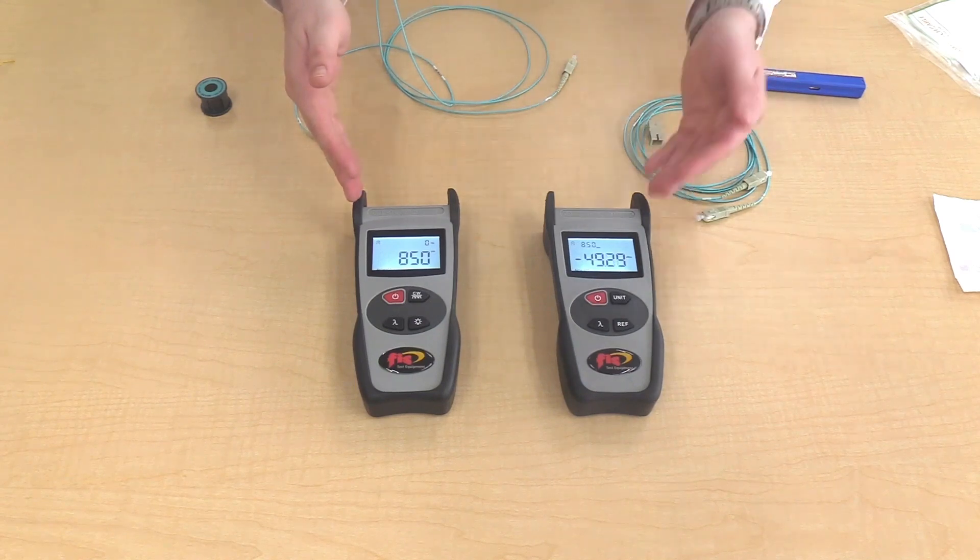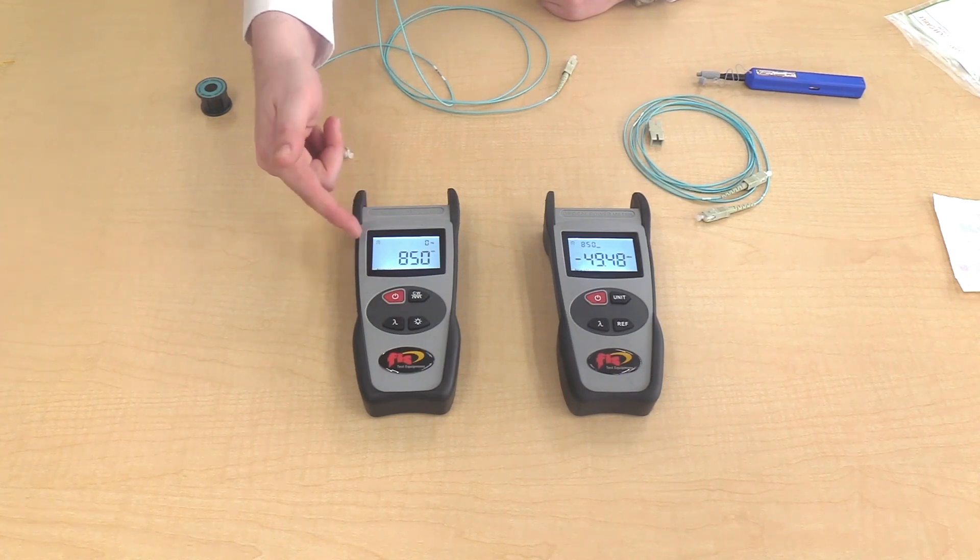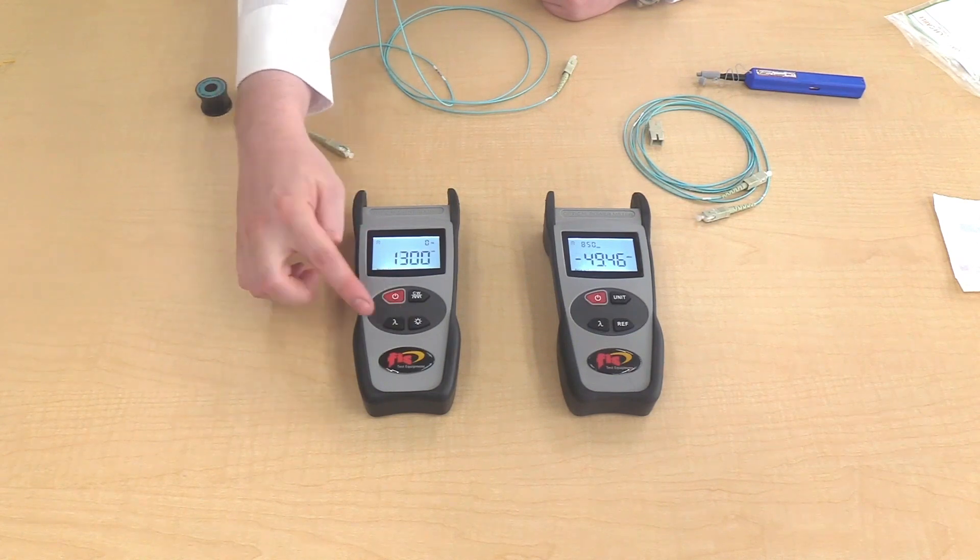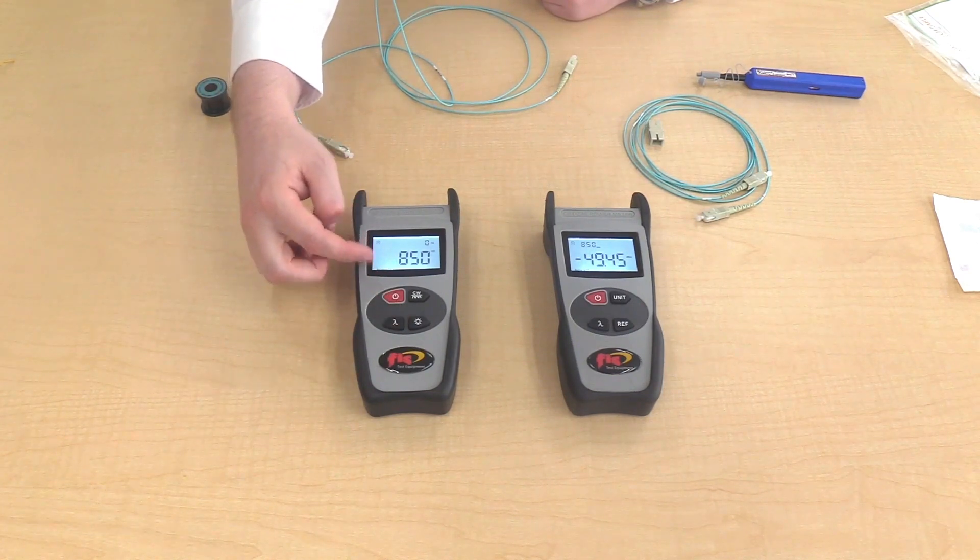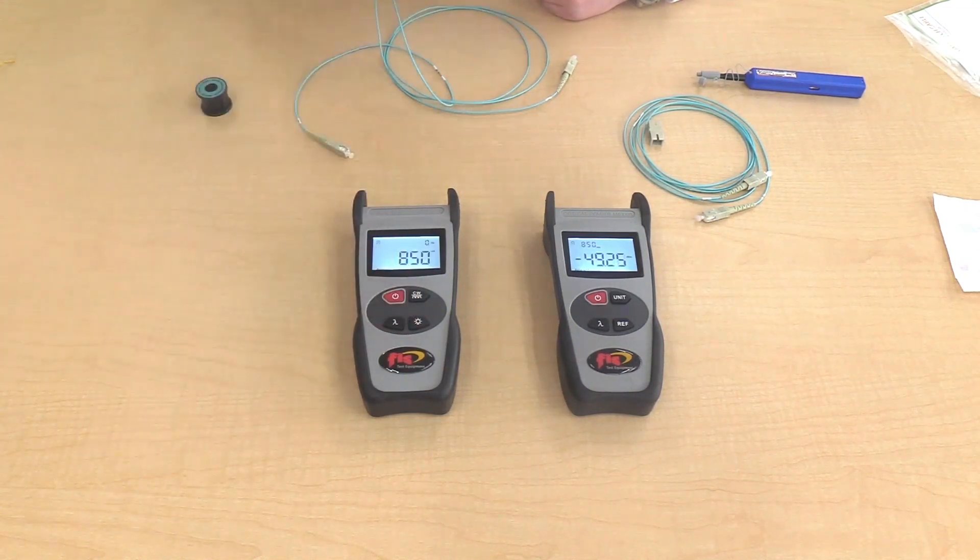You have the light source and power meter. For the light source, give it a few minutes for the laser to warm up. The display shows the current wavelength that is on. To change the wavelength, press the lambda symbol to 850 or 1300 nanometers. The top right button modulates the tone, and bottom right button is for the backlight.